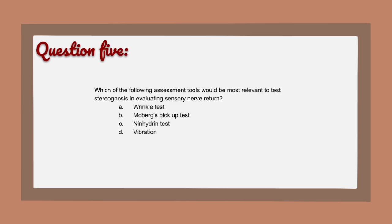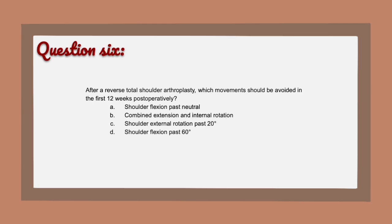Question 5: The correct answer is B — Moberg's pickup test for stereognosis. The wrinkle test is to test for nerve denervation — you put the hand in water and the area that is not innervated will not wrinkle or get pruney. The ninhydrin test tests for sweat secretions — no sweat will be secreted in the area of nerve denervation. Vibration would not help assess stereognosis.